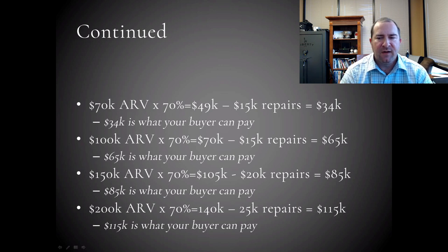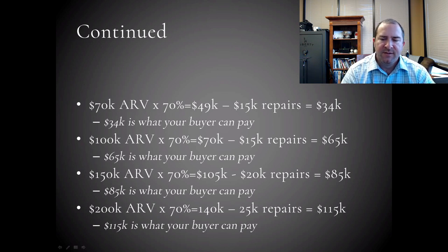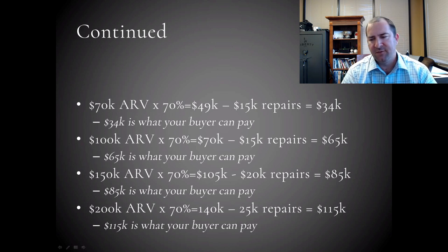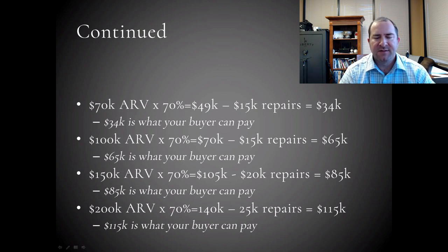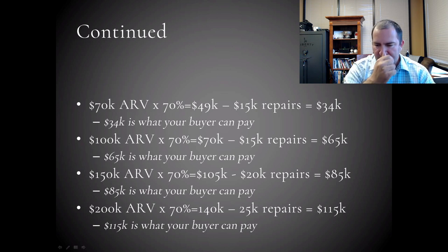For a final example — covering a range from $70,000 to $200,000 across many markets — $200,000 times 70% gives you $140,000. Subtract out $25,000 in repairs. I upped the repairs a bit because houses in this price range tend to be larger, in nicer areas, so renovation costs are higher. That leaves $115,000. So on a $200,000 ARV, your cash buyer can offer a maximum of $115,000.